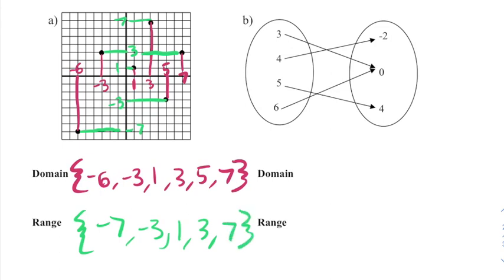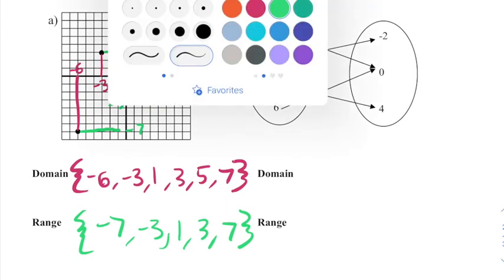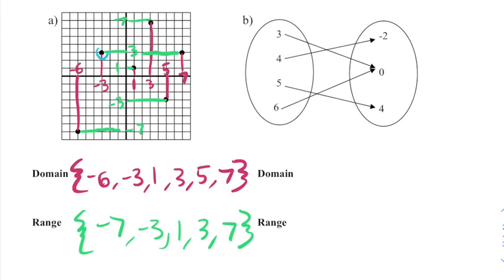Even though two points had that y value of 3, we only write it one time. Now you could also do this problem by looking at each point and listing out an ordered pair. For example, this point right here would be (-3, 3) and then you would treat it just like the last problem we did that had ordered pairs. I kind of like to draw all over the graph and it makes it easier to see for me.